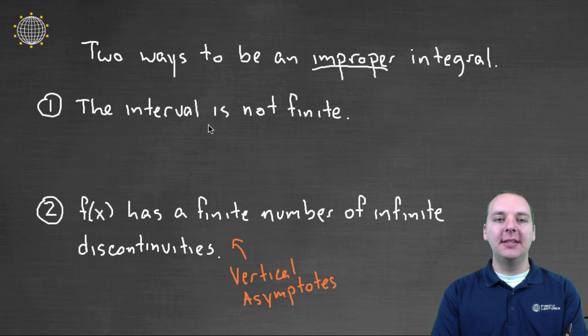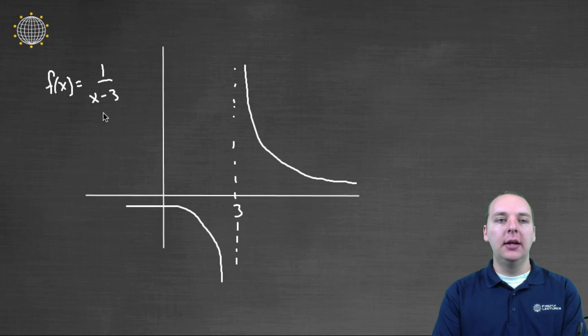Now I've already shown you an example of an interval that wasn't finite. Let me show you an example of something that has one of these infinite discontinuities that I'm talking about here. Let's say we have the function f(x) equals 1 over x minus 3. Now I will say, just having, or integrating a function that has a vertical asymptote doesn't automatically make that integral an improper integral. Let me show you what I mean.